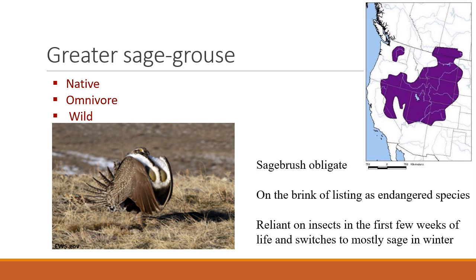Sagegrouse are large ground-nesting birds that occur on rangelands and are also game birds. They are a sagebrush-obligate species and really require sage, especially in the winter. Their population has declined steadily over the years and they have been proposed for listing under the Endangered Species Act several times, though at this current time they are not listed as endangered. They are omnivores — the very young chicks require insects in the first few weeks of life, but later they will eat forbs and sagebrush.